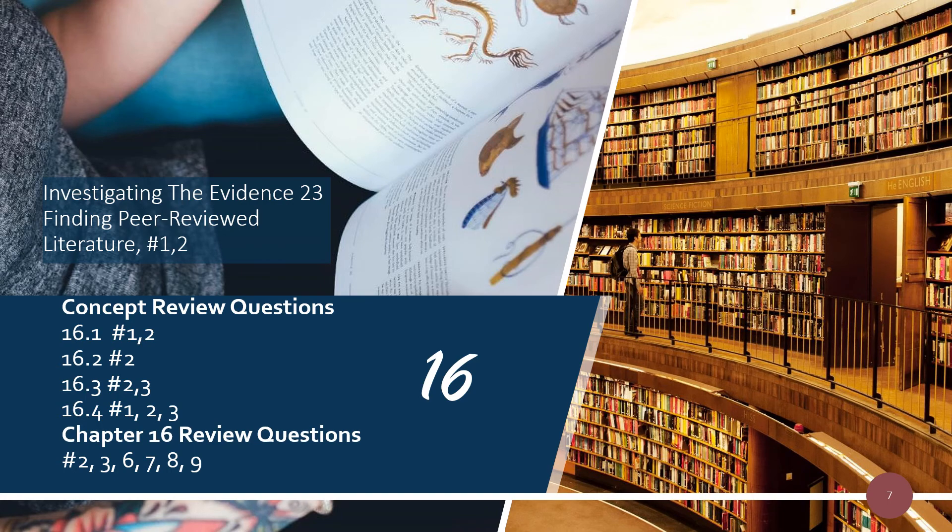If you look at the end of this section in the textbook, there is a good concept review question. It asks: suppose you sample an area and find five species of forest trees with proportions of 0.35, 0.25, 0.15, 0.15, and 0.10. What would be the Shannon-Wiener diversity index of this community? You should be able to calculate a Shannon-Wiener diversity index, so you might want to go through and give that a try.